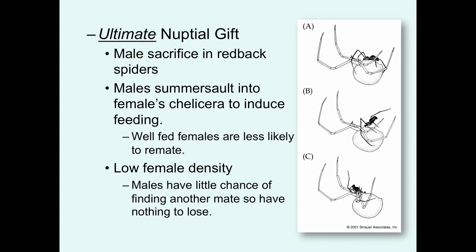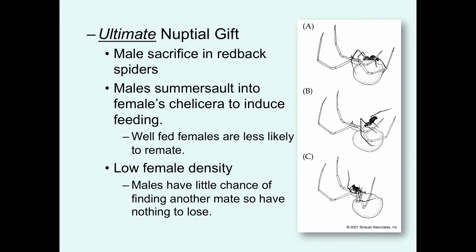Here's one of my favorite examples of a nuptial gift — what could be considered the ultimate nuptial gift. Male redback spiders actually sacrifice themselves as a nuptial gift. During copulation, the males crawl up to the female, insert their pedipalp containing the sperm packets into the female's reproductive tract, and then somersault their body into the female's chelicera and wiggle it around to induce her to eat him. The reason he does this is that a well-fed female is more likely to immediately lay her eggs using his sperm and is less likely to remate.